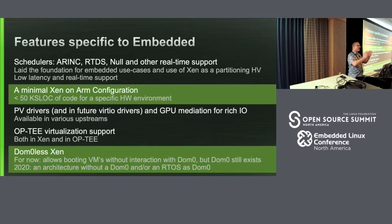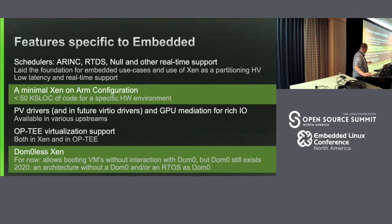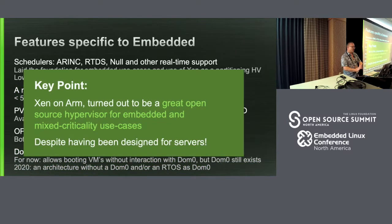A key critical component is DOM0-less Xen. In a traditional Xen system you have DOM0, a special VM that typically runs Linux, which would normally have to be safety certified — and that's obviously a lot of lines of code. The DOM0-less Xen effort is driven by Xilinx and will be part of our initial safety certification scope. Almost accidentally, because Xen on ARM was originally designed for servers, through the efforts of companies like EPAM and Xilinx it's turned out to be a great hypervisor for embedded and mixed criticality use cases.